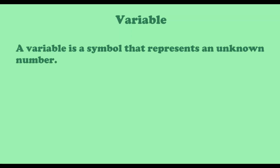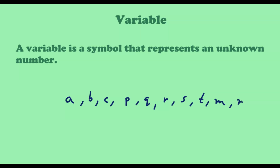First of all, let us recall what we mean by a variable. A variable is a symbol that represents an unknown number. We use letters to represent variables. Some letters that we commonly use are a, b, c, p, q, r, s, t, m, n, and so on. We can use any letter we want, but usually we avoid using the letter 'o' because it's easy to confuse with the number zero. So other than 'o', we can use any other letter to represent a variable.